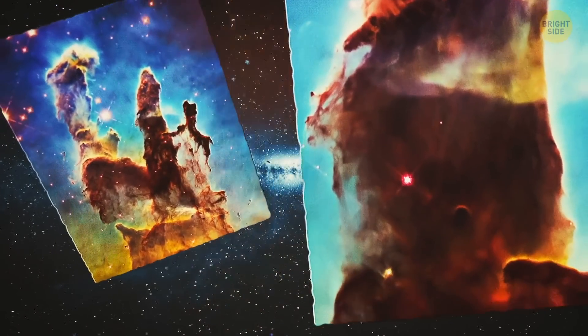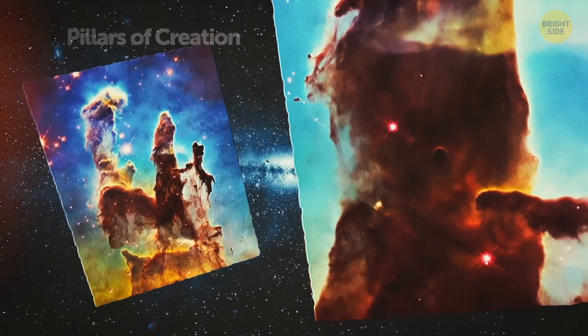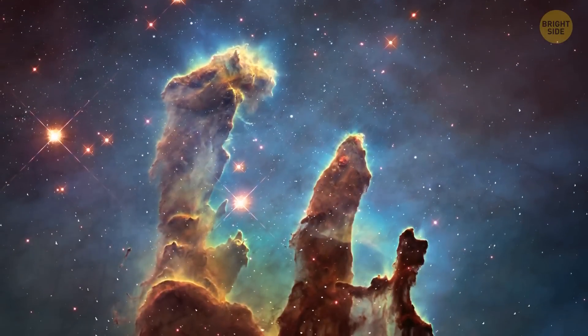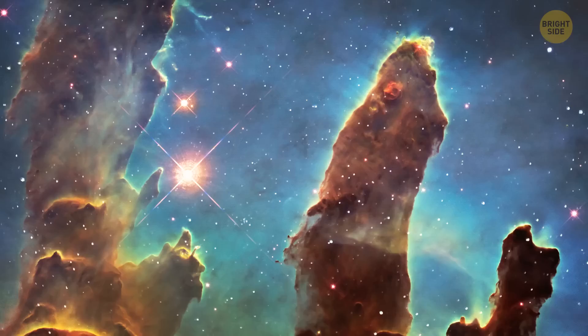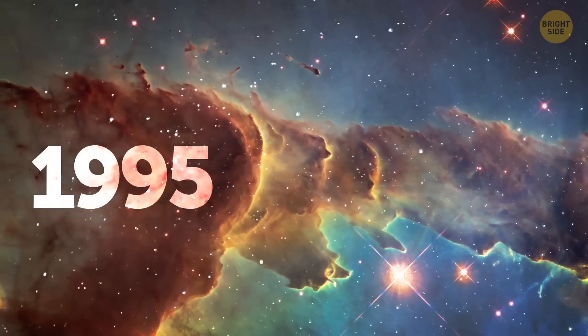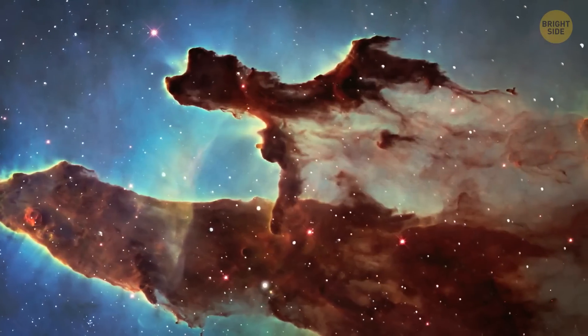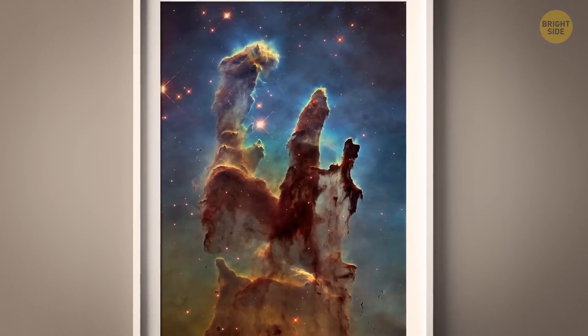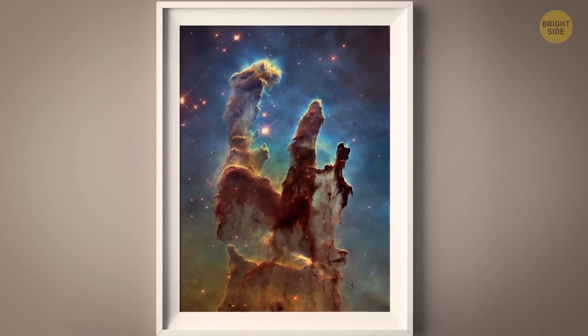One of the most famous images taken by the Hubble Space Telescope is the Pillars of Creation. It's a photo of a region of the Eagle Nebula, where new stars are born. The photo, which was taken in 1995, shows massive pillars of gas and dust towering above the nebula. It has become one of the most iconic images of the universe.